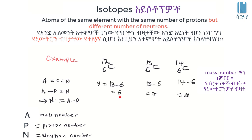The proton number determines the isotope. The isotope number is 6, 7, or 7. Atoms are all the same element. The proton number is the same for atoms of the same element, but the number of neutrons and the mass number differ.